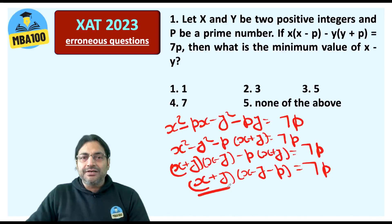Now please concentrate here. This X + Y is a positive integer. Similarly, X - Y would also be a positive integer. 7 is a positive integer, P is a positive integer. So of course, both of them are positive integers.